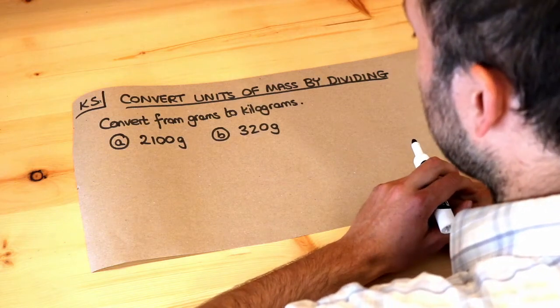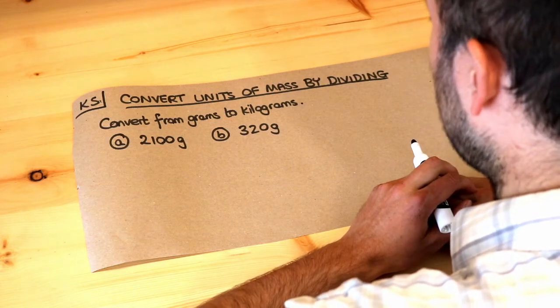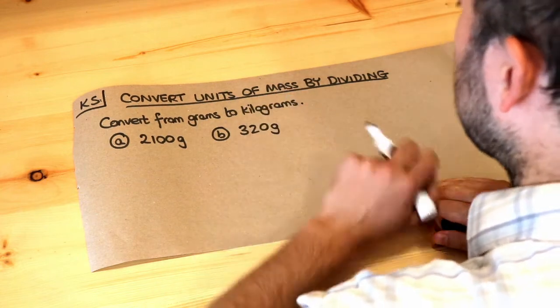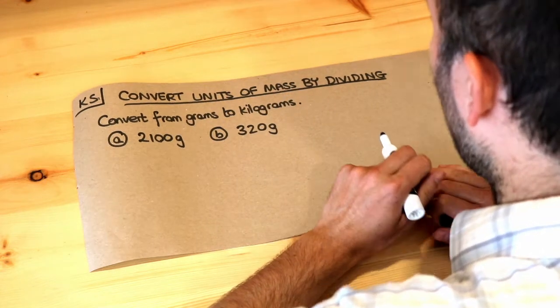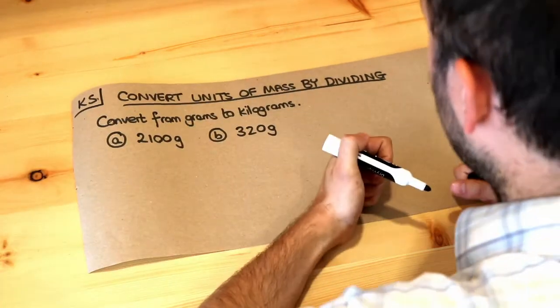Hello and welcome to this Dr Ross Mass key skill video on converting units of mass by dividing. Mass, by the way, is a measure of how much matter something consists of.